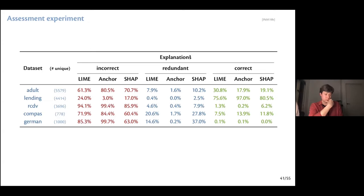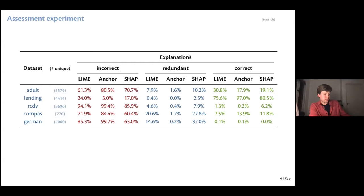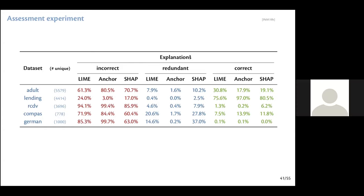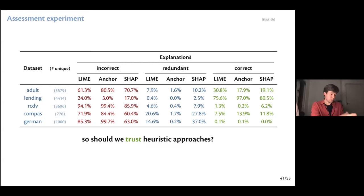A question was raised about how we determine if an explanation is correct or incorrect. We check if there is an instance in the feature space that is classified differently but is covered by the explanation — that is, the negation of the AXP condition. So we probably should not trust these heuristic explanations. At least I would not bank on them.